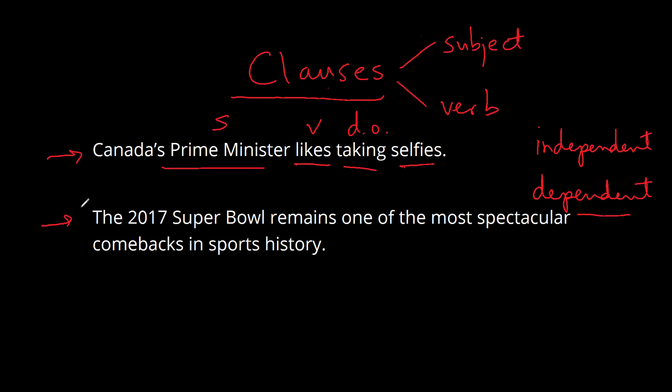The second one reads, the 2017 Super Bowl remains one of the most spectacular comebacks in sports history. So, here again we have a main verb, and then if we ask who or what remains, we get to the 2017 Super Bowl. That's our subject. And then we have an object as well.